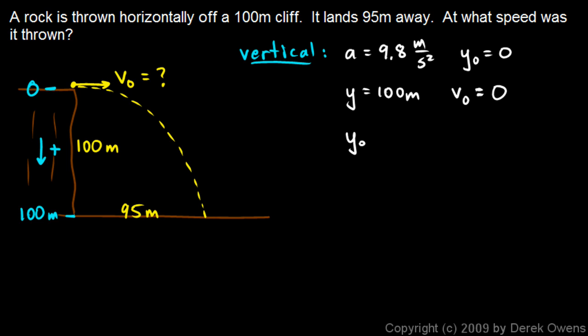And then I know this equation. y, the height, is equal to y0, plus v0 t, plus 1/2 at squared. And because the initial velocity was 0, this term goes away. v0 times t will be 0. And the initial height is also 0, so that goes away. So the equation simplifies to this: y is equal to 1/2 at squared.